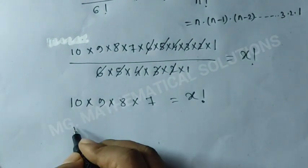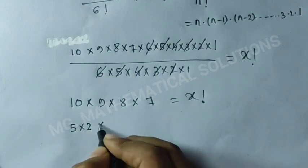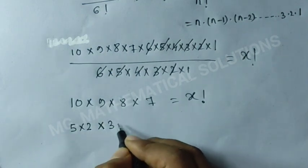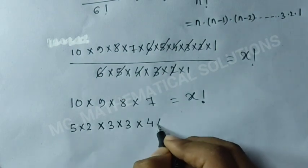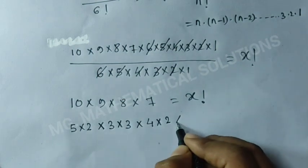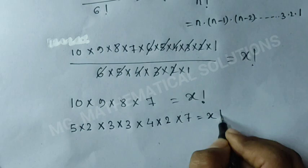10 we can write as 5 times 2, 9 we can write as 3 times 3, 8 we can write as 4 times 2, times 7 equals x factorial.